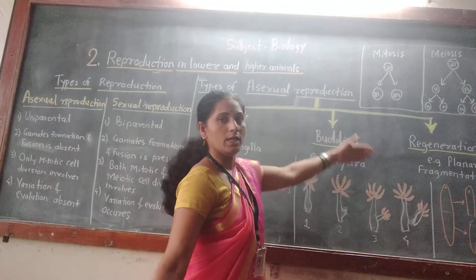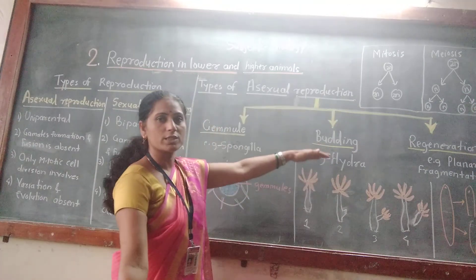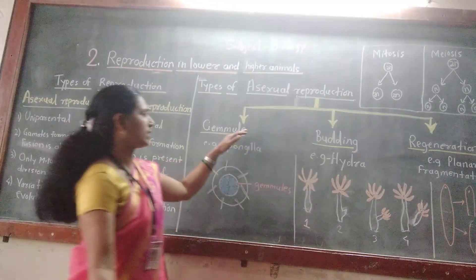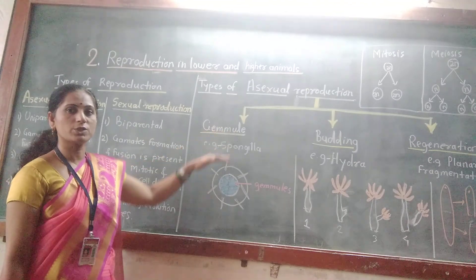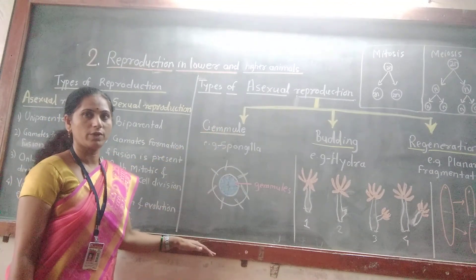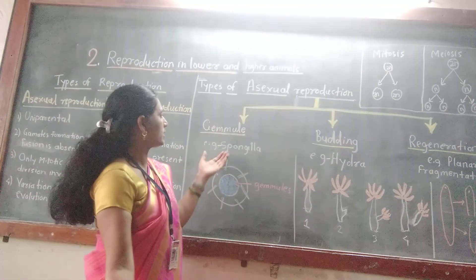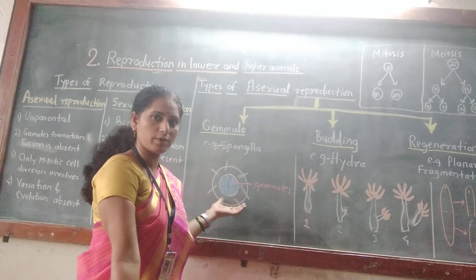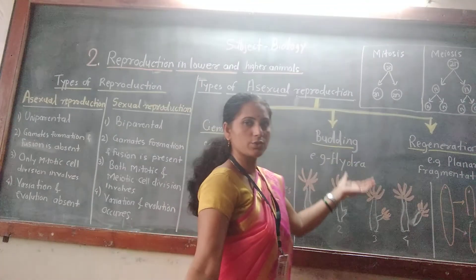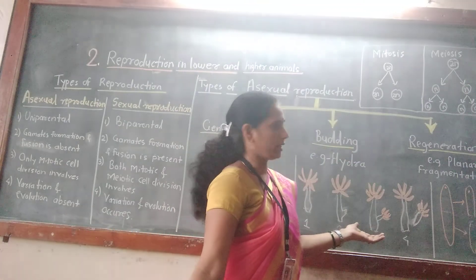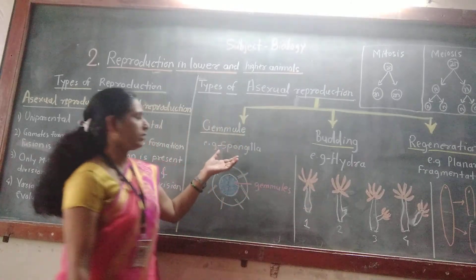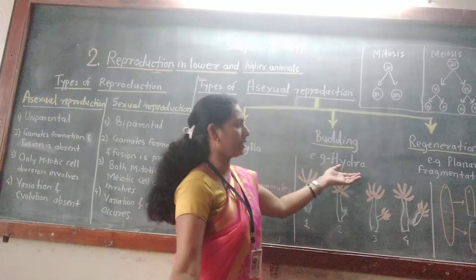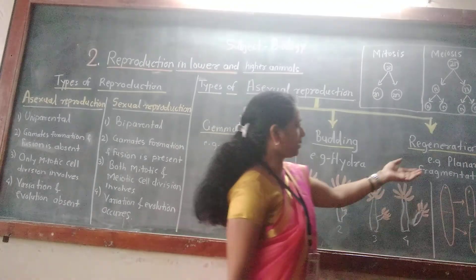In the case of Hydra, budding occurs during favourable conditions. Whereas gemmule formation occurs during unfavourable conditions. So the key difference: gemmule formation only occurs during unfavourable conditions and budding occurs during favourable conditions. Example of gemmule is Spongilla, whereas example of budding is Hydra.